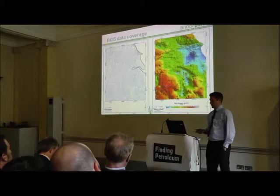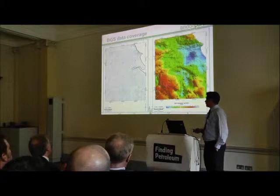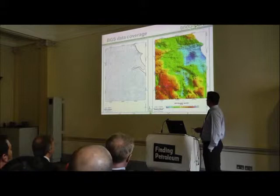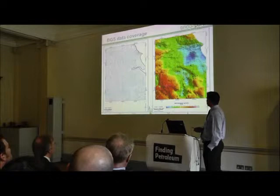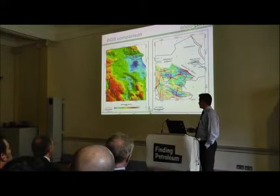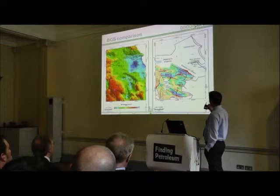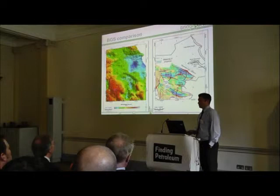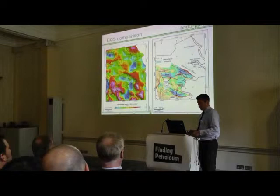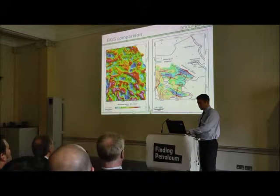An example of that data: on the right there is the coverage map, showing the point sampling that is available. And that product you download to start with, at that scale looking at northern England, is relatively not that meaningful — you just get a very regional picture. But with various techniques you can apply to potential field data — filtering and such forth — you can start pulling out a lot more information than what you see on that initial image. On the left there is an isopach map of the Bowland, information again taken from the web. By applying various filters and techniques to the data, you can extract more detail.